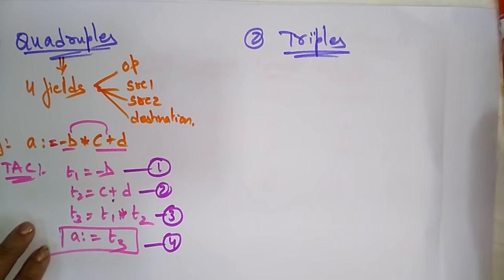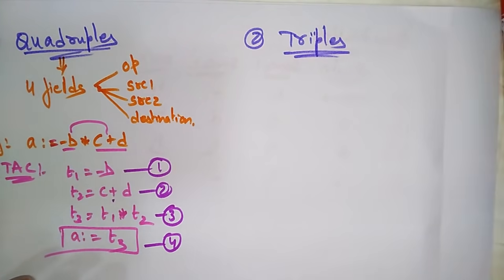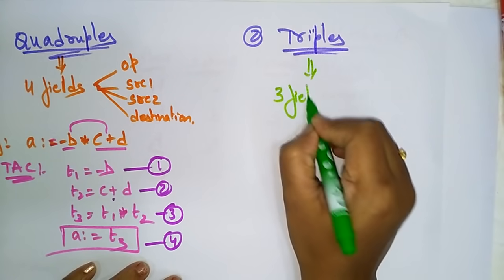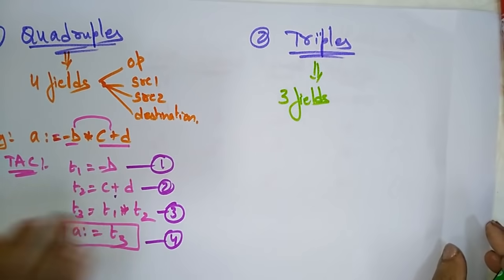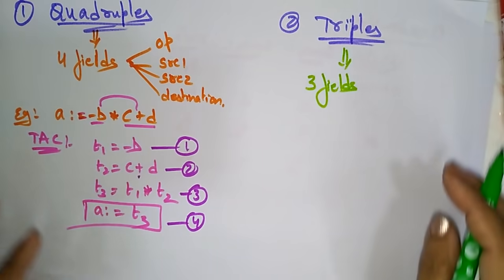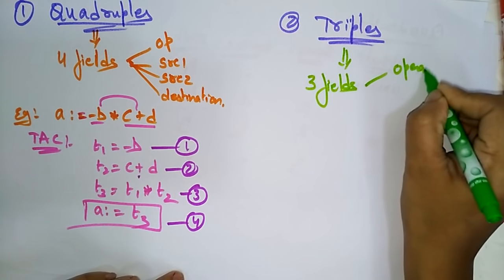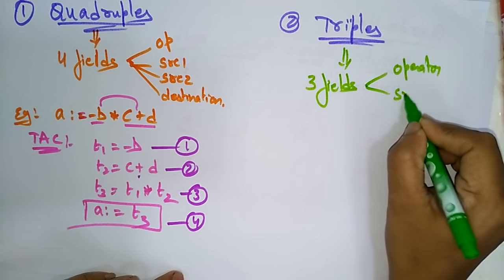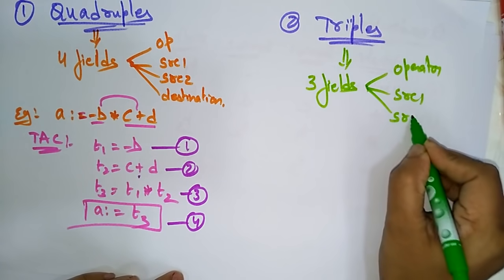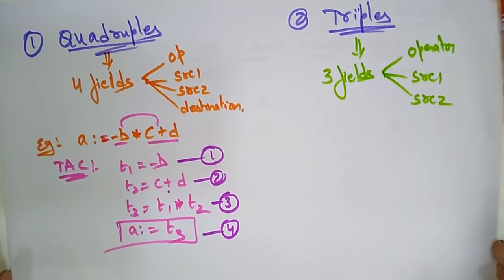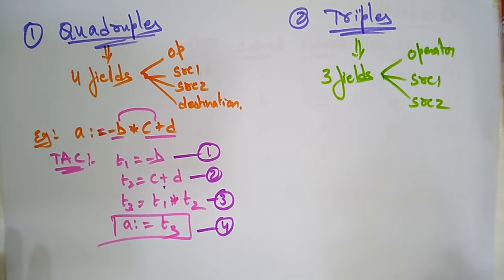Now let's see what triples are. The name itself says it has three fields. The three fields are: operator, source one, and source two. That's it — there is no result field for triples.